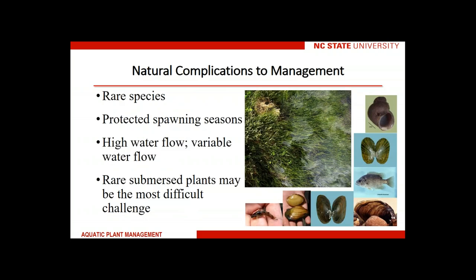There are also natural complications to management. We certainly have water bodies with rare species or other species that we want to protect — we can't do anything that would deplete those populations. Some species may have protected spawning seasons where you cannot undertake any management activities. Other systems may have high or variable water flow, which can be a challenge. Rare submersed plants may be among the most difficult challenge because a rare submersed plant is going to be closely related, both ecologically and botanically, to the typical management targets.